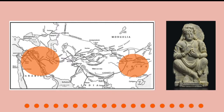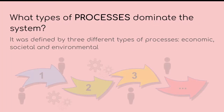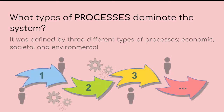During the 10th and 14th centuries, considering the decline of the Silk Road, silk was transported less, but remained an important medium of exchange and a symbol of the power balance between China and other regions. What types of processes defined the system? The Silk Road was defined by three different types of processes: economic, societal, and environmental.